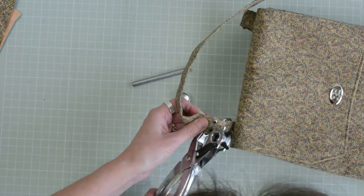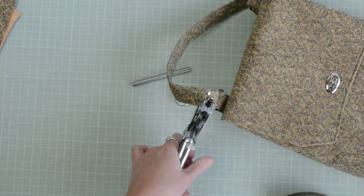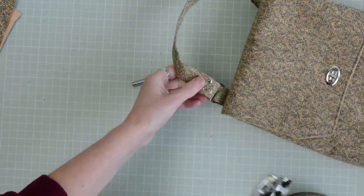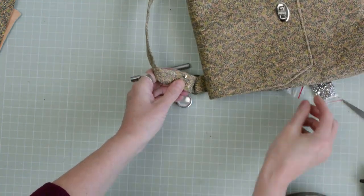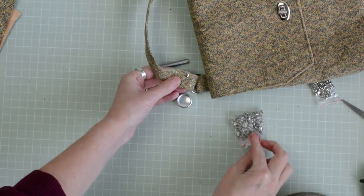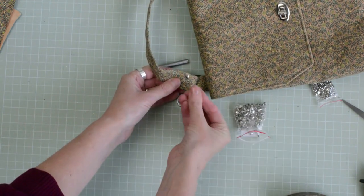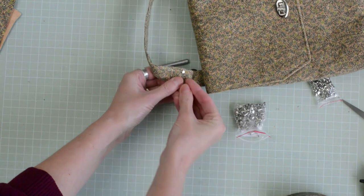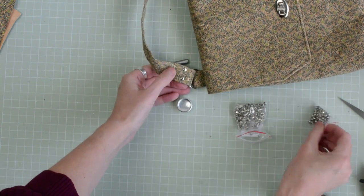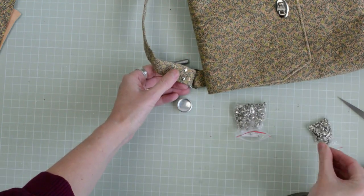Double cap rivets are a brilliant addition to bag making skills. They really help if your sewing machine can't cope through layers. And they also look really professional. And then when this is in, our bag is finished.